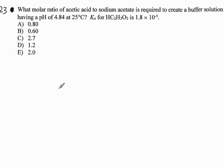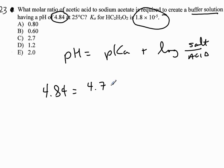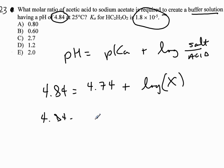Question 23: what is the molar ratio of acetic acid to sodium acetate required to create a buffer solution having a pH of 4.84? Whenever you see buffer solution, you should think Henderson-Hasselbalch. So pH equals pKa plus the log of the conjugate base over acid. I have a pH of 4.84. I need pKa, which is the negative log of Ka, giving 4.74. Then I solve for the ratio.